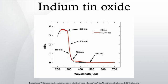Other uses include gas sensors, anti-reflection coatings, electro-wetting on dielectrics, and Bragg reflectors for VCSEL lasers. ITO is also used as the IR reflector for low-E window panes.